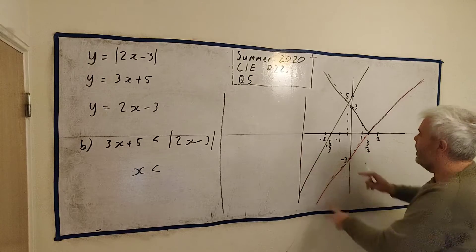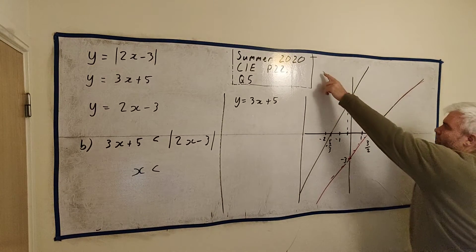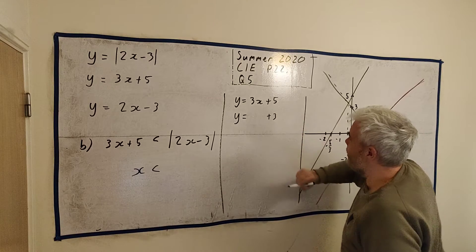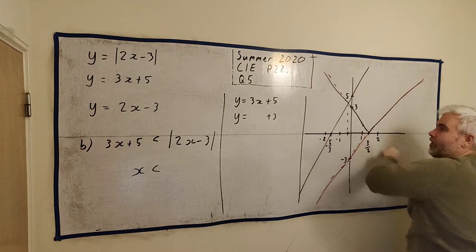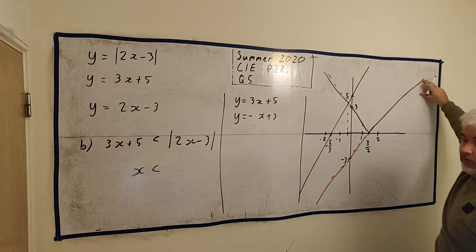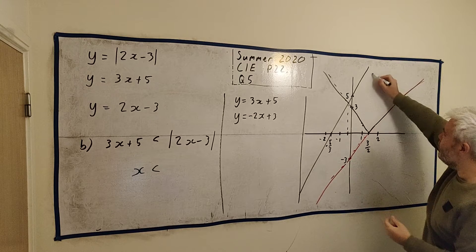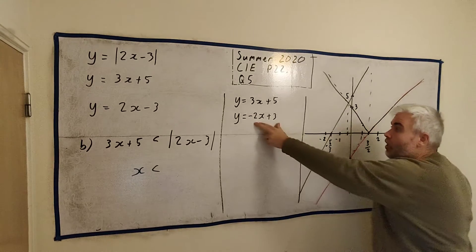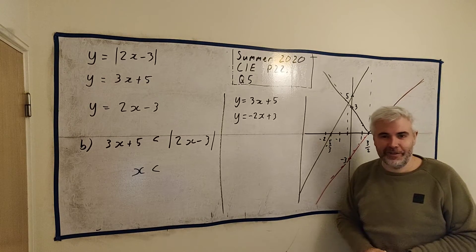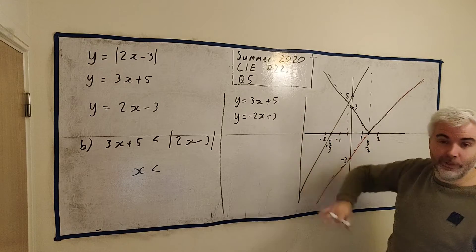We need y = 3x + 5, and we need the reflected line on the left side of the V. We know that line has y-intercept plus 3 and slope minus 2 — it's just the opposite of the original slope of 2 — because that's how the absolute value mirroring works. So now this is a simple simultaneous equation. We take the top equation minus the bottom one: y minus y is 0; 3x minus (minus 2x) is 5x; and 5 minus 3 is 2. So we get 5x equals negative 2.